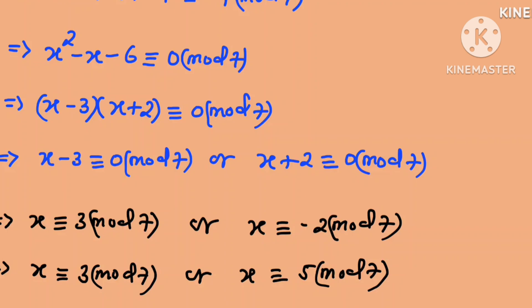Therefore our two solutions in mod 7 are x equals 3 or x equals 5. Thanks for watching and see you in the next video.